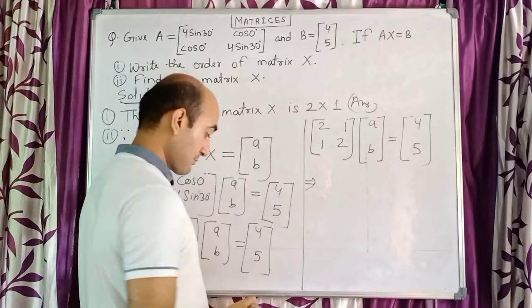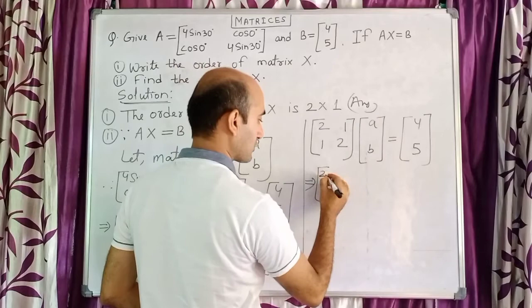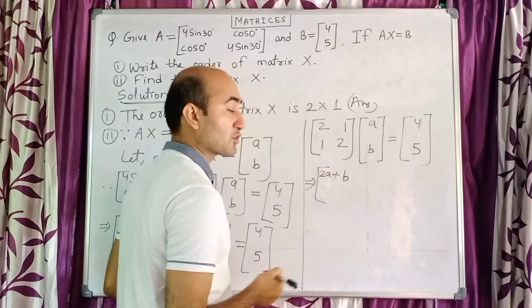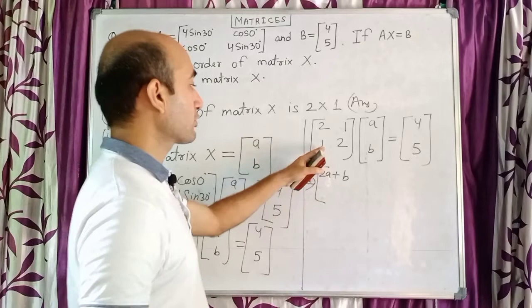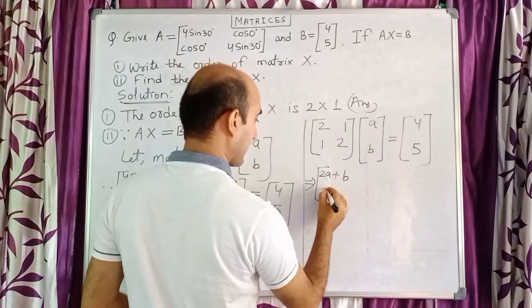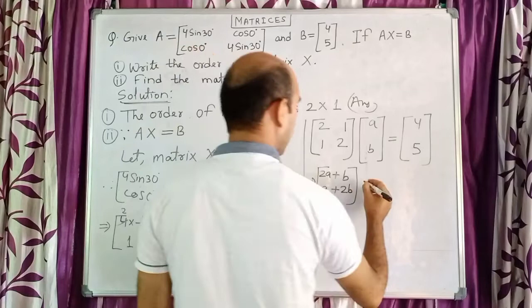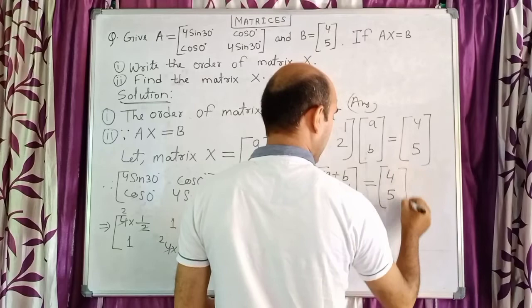Now multiply the matrices. First row with first column: 2×a + 1×b = 2a + b. Second row with first column: 1×a + 2×b = a + 2b. There is no second column, so multiplication is complete. The result equals [4; 5].